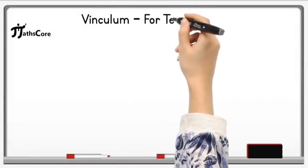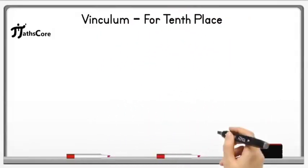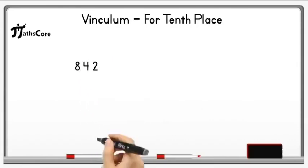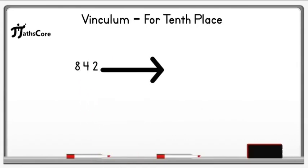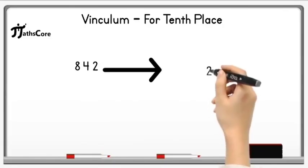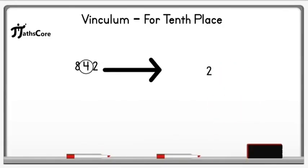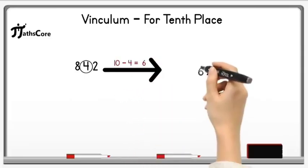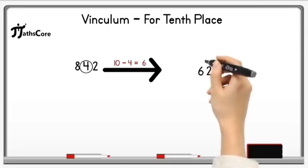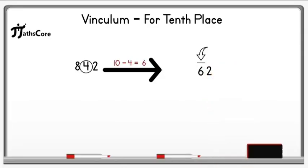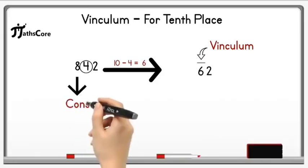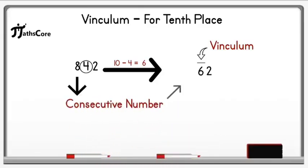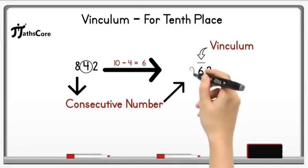The second example on vinculum for the tens place is 842. Using the same method: write down the unit place digit 2, then subtract the tens place digit 4 from 10. 10 minus 4 equals 6. Write 6 before 2 and place an overline on it, which is vinculum. Now find the consecutive number of the hundreds place digit 8, which is 9. Write 9 before 6.